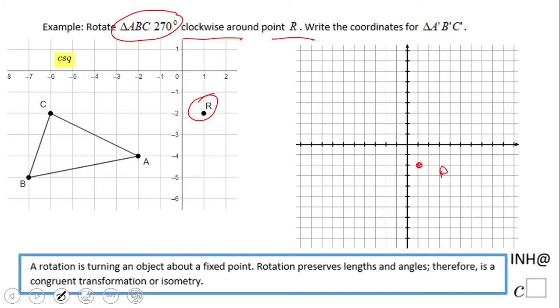This is the point we're going to rotate around. First of all, let's see, clockwise means this way, right? So we're going to go something like that. 270 degrees, I'm thinking that we're going to be somewhere here, right? So let's start with point A, which is negative two, and see how that rotation looks like.